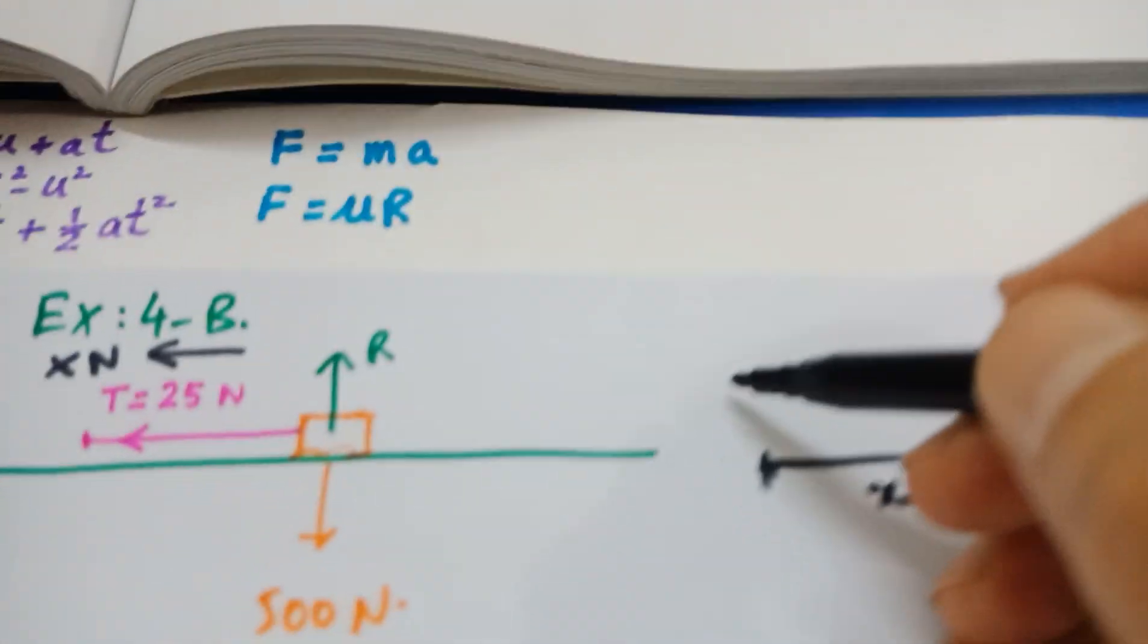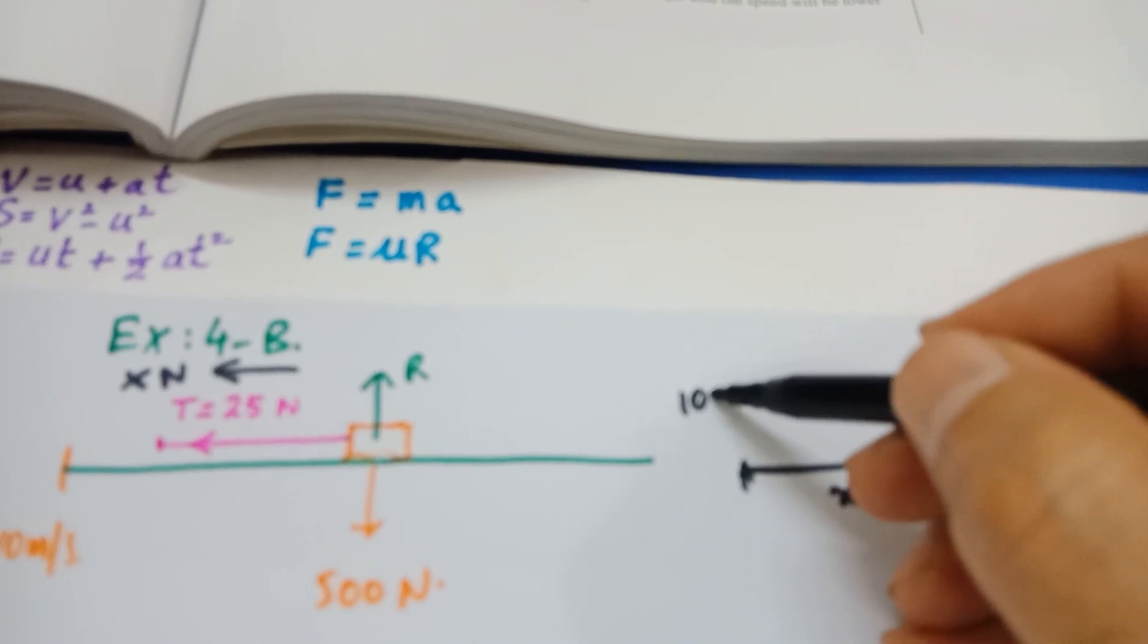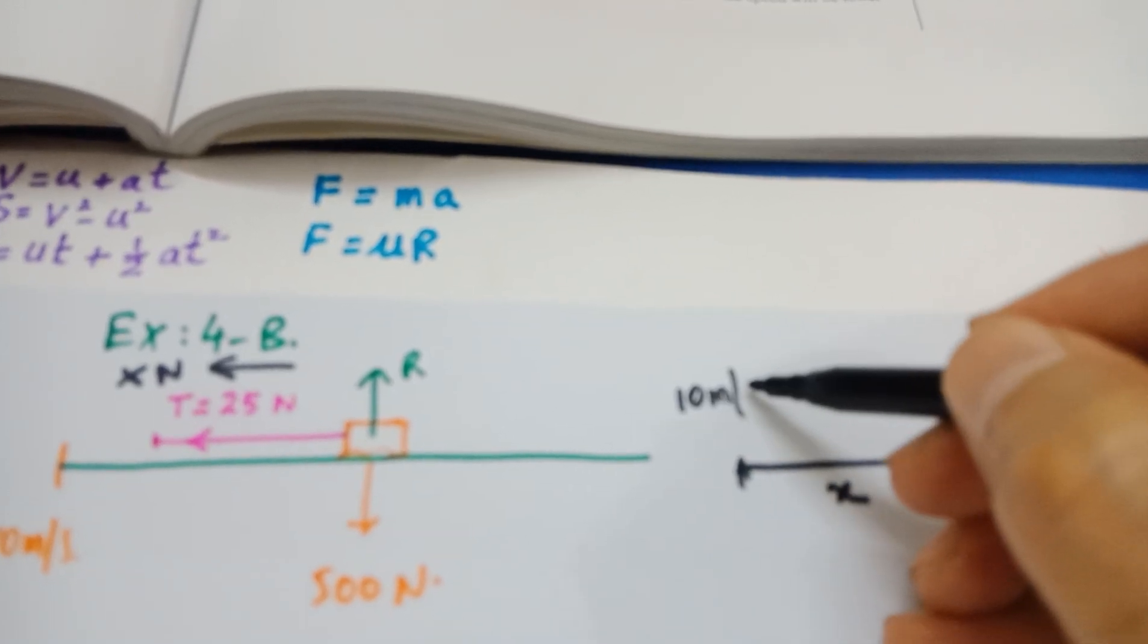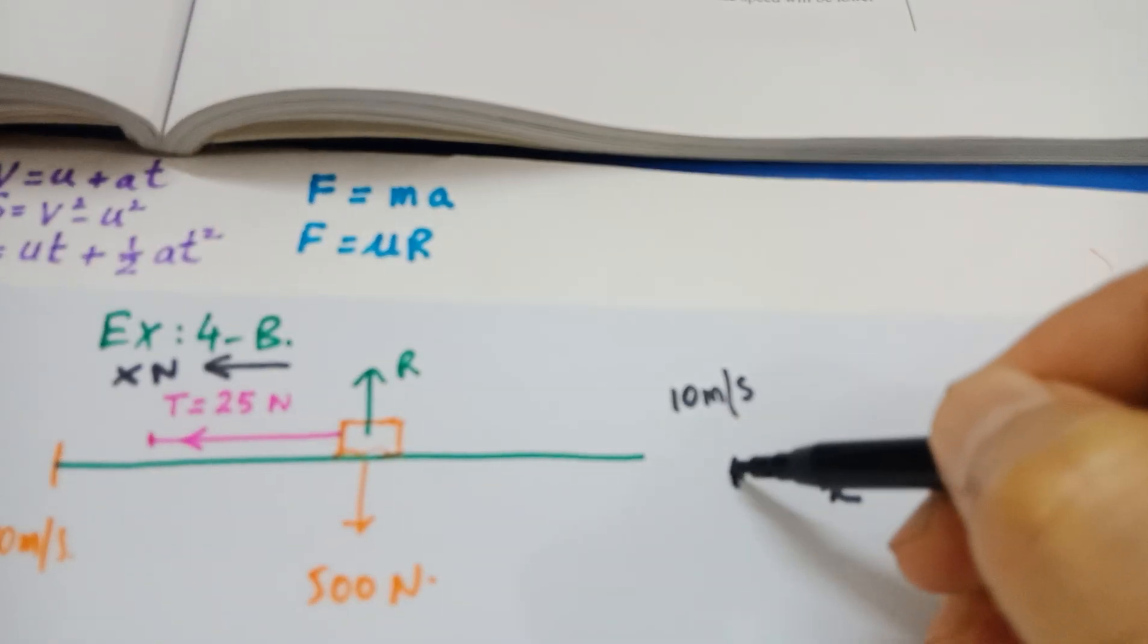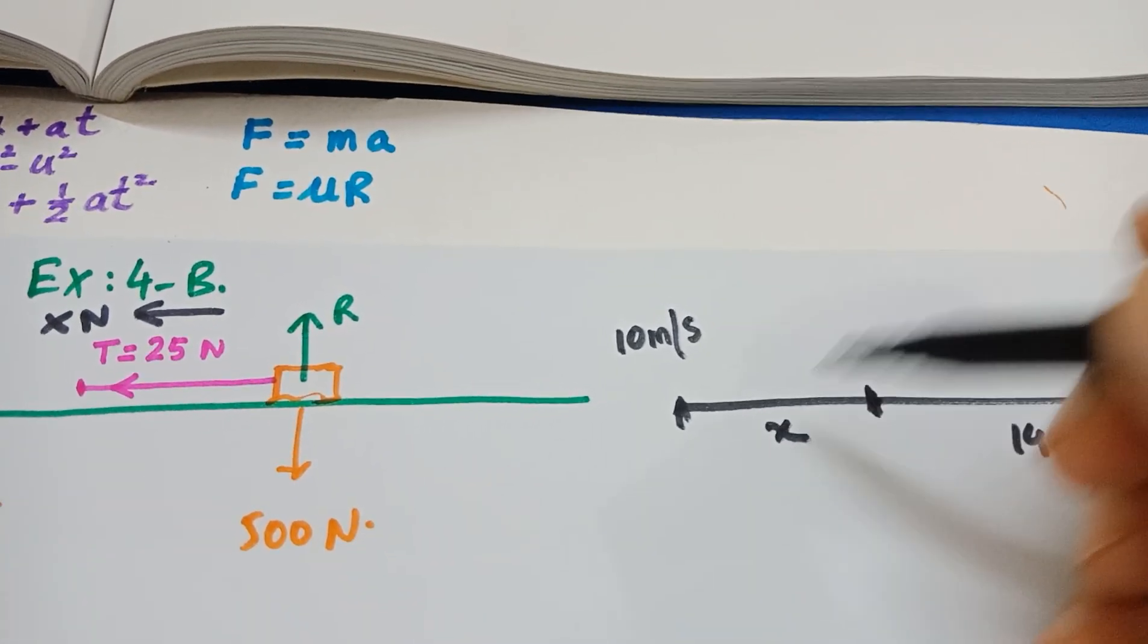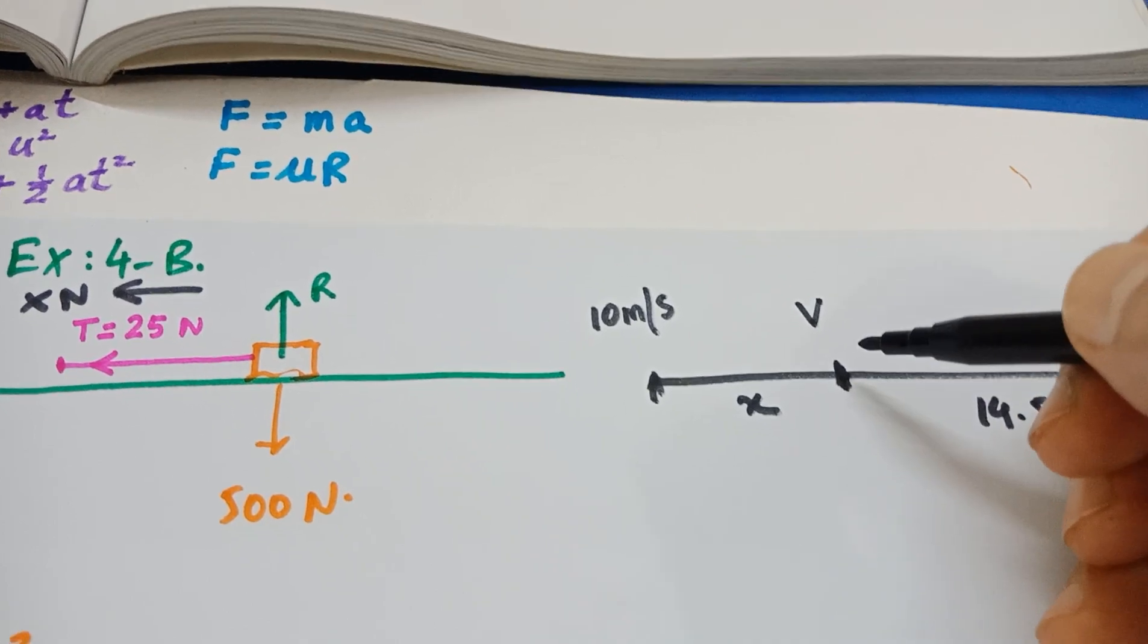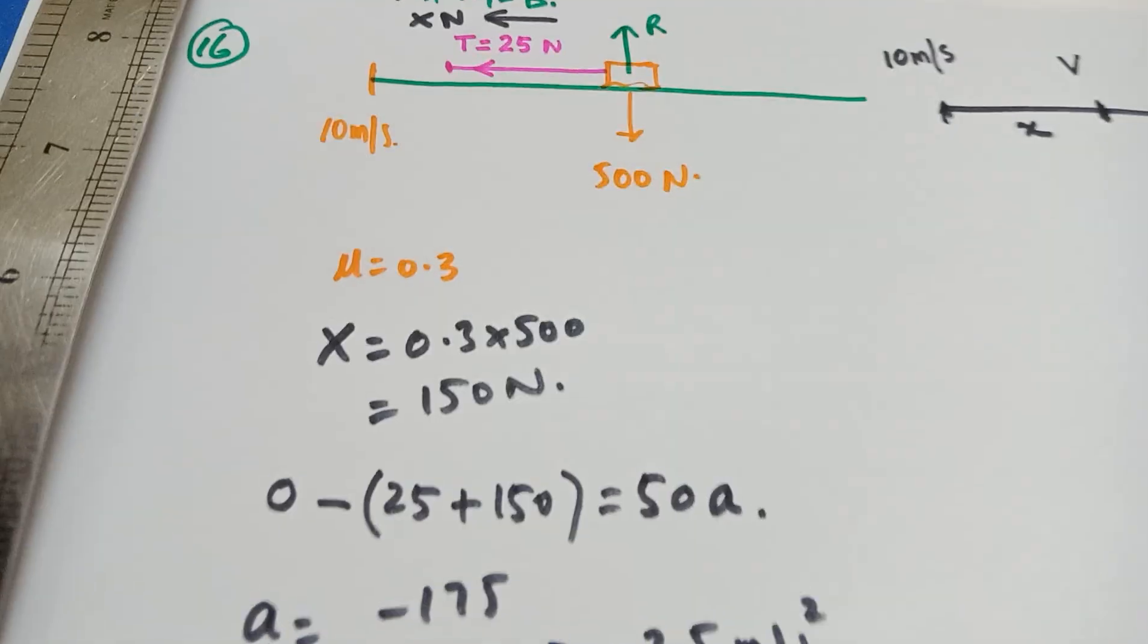Now, here, the initial speed is, it is given that it was, when it all happened, it was slowing down. And its initial speed was 10 meters per second. So we have the initial speed, we have the distance. Let's find the final speed. What was the speed when the string broke? So I'm going to calculate it here.